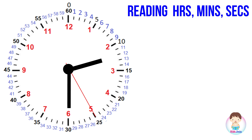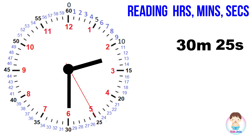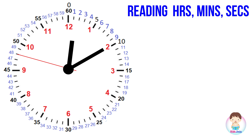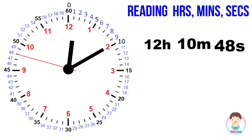Now let's add the seconds hand and read the time. In this clock, the second hand points at 5 — that is the 25th mark — so it is 25 seconds. The minute hand points at 6, the 30th mark, so it is 30 minutes. The hour hand points between 2 and 3, so it is 2 hours. The full time is 2 hours 30 minutes 25 seconds. In another example, the second hand points at the 48th mark — 48 seconds. The minute hand points at 2 — the 10th mark — so it is 10 minutes. The hour hand points between 12 and 1, so it is 12 hours. The full time is 12 hours 10 minutes 48 seconds.